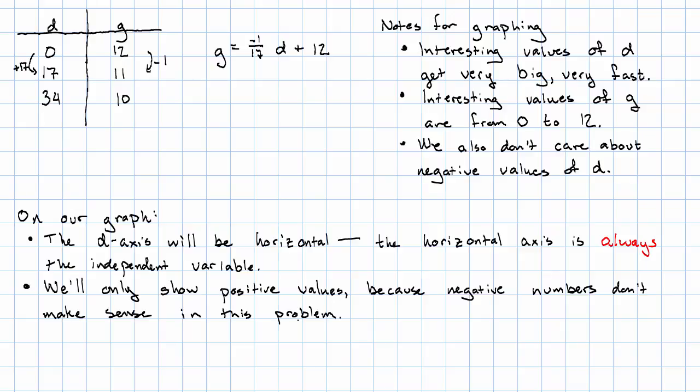But not in this example. And then the last thing we're going to decide to do is we're going to count the D axis by 17s. Why by 17s? Well, because then we get nice points. Right? Every time D goes up by 17, G goes down by 1. We'll be able to plot nice points if we count by 17s on the D axis.